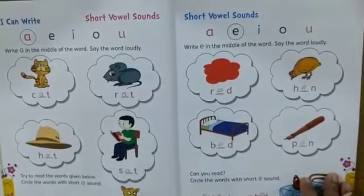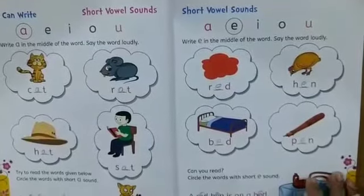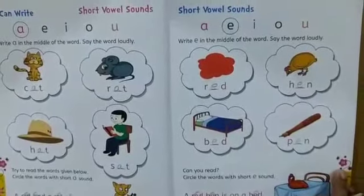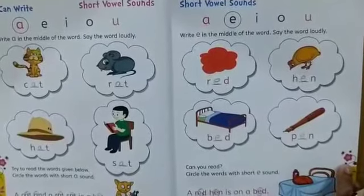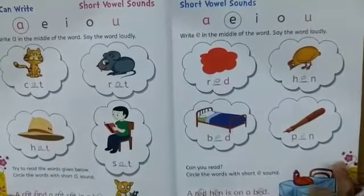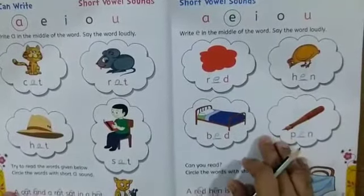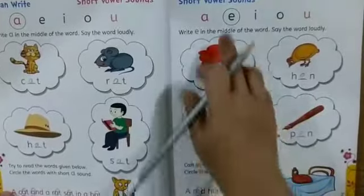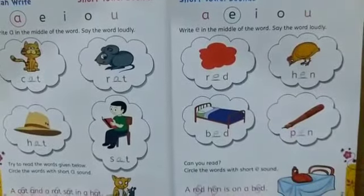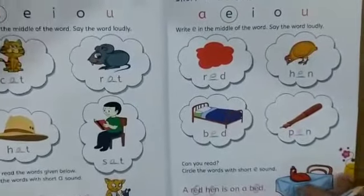Now take out the textbook, all of you. Turn to page 19 in your textbook. Now we will revise these words once again — the E sound words. Short vowel sound of E.